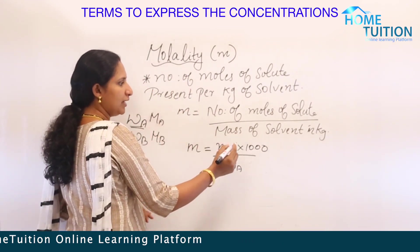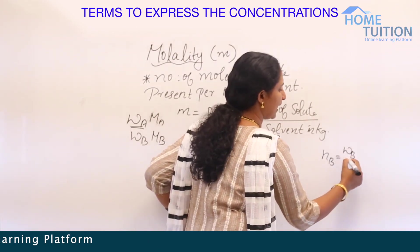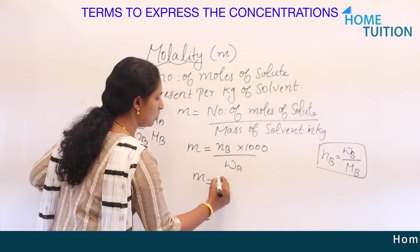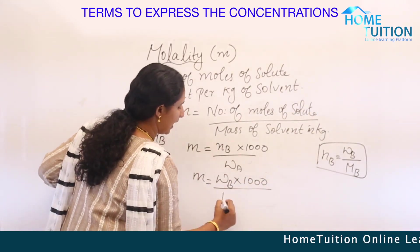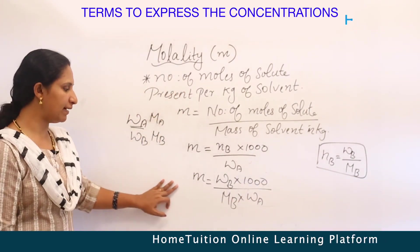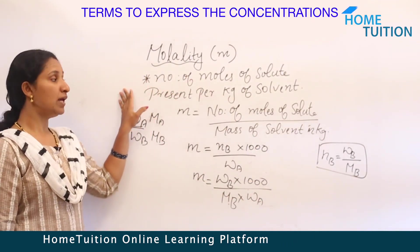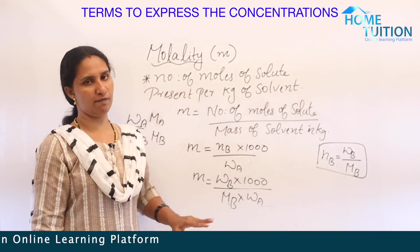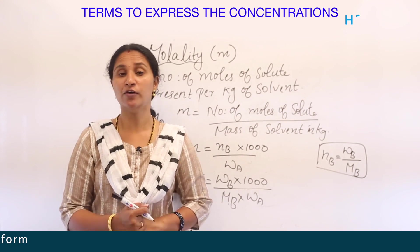NB equals WB by MB. So molality m equals WB into 1000 divided by MB into WA. Molality means the number of moles of solute present per kilogram of solvent.